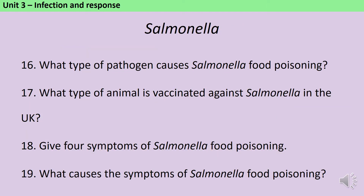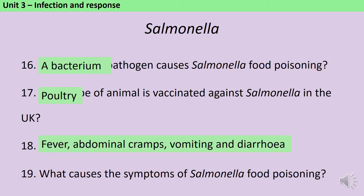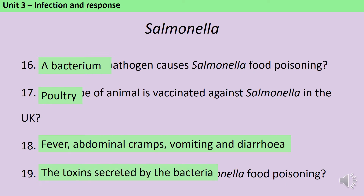Salmonella food poisoning is caused by a bacterium. In the UK we vaccinate our poultry against this. If you do get salmonella food poisoning then the symptoms include fever, abdominal cramps, diarrhea and vomiting. These are caused by the toxins that the bacteria release.